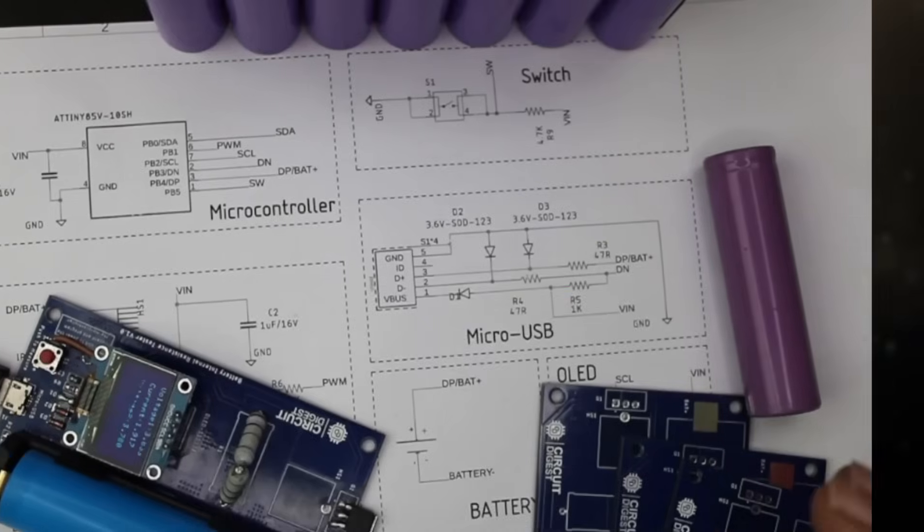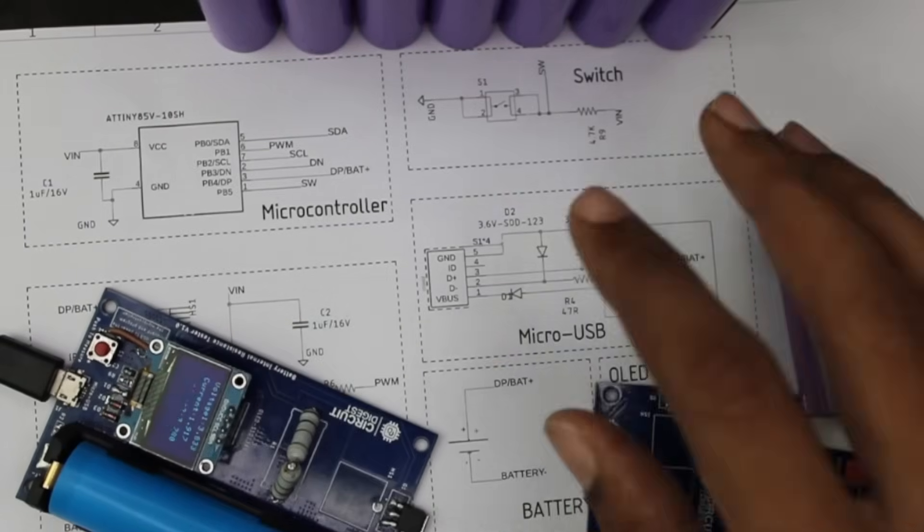It's a PCB-based project as you can see here. All you have to do is insert the cell here and it will calculate the IR and display it on the OLED. Sounds interesting, right? Let's see how to do it.